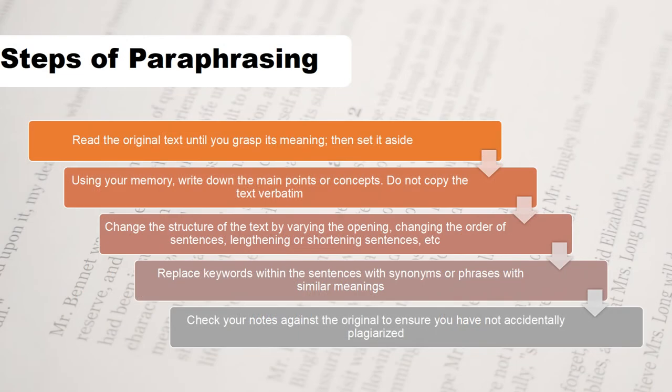We can summarize the whole paraphrasing process into certain steps: first, read the original text until you grasp its meaning and set it aside; use your memory and write down main points or concepts; do not copy text verbatim; change the structure of the text by varying the opening, changing sentence order, lengthening or shortening sentences; replace keywords within sentences by using synonyms or phrases of similar meaning; and check your notes against the original to ensure you have not accidentally plagiarized.